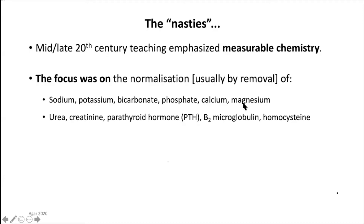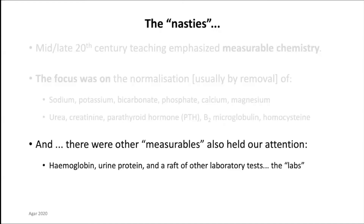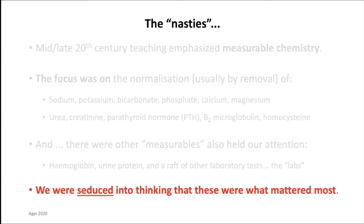Sodium, potassium, bicarb, phosphate, calcium, magnesium — the electrolytes that accumulate or change in people with chronic kidney disease. Then there are the toxins: urea, creatinine, parathyroid hormone, beta-2-microglobulin, homocysteine, and that massive list from Ray Van Holder. Other measurables held our attention too: hemoglobin, urine protein, a raft of other laboratory tests. And we were seduced into thinking that these were what mattered most. I'm sorry to tell you, I don't think that's necessarily quite the case.